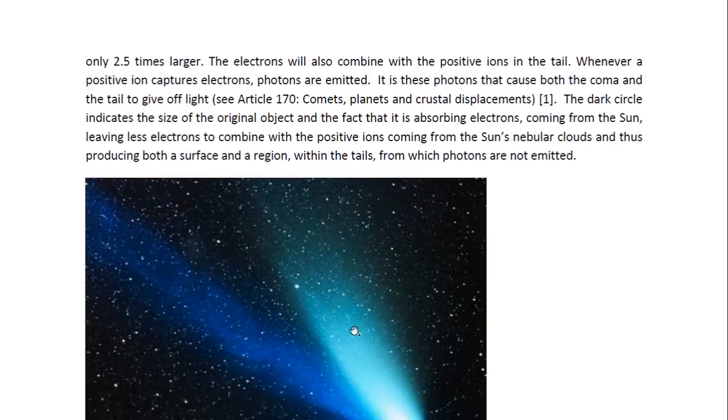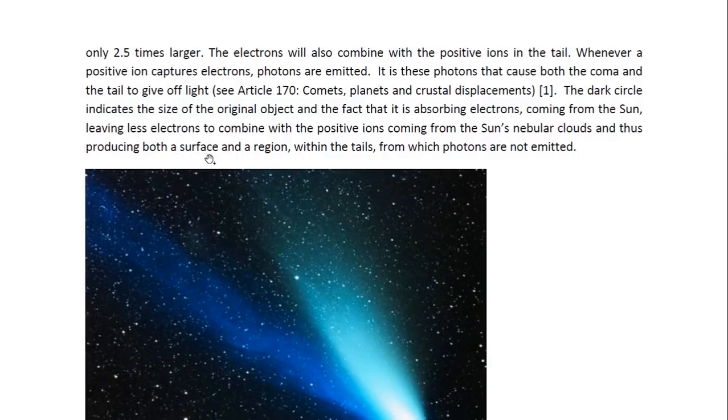The electrons will also combine with the positive ions in the tail. Whenever a positive ion captures electrons, photons are emitted. That's why it looks white. Photons are being emitted, visible light photons. It is these photons that cause both the coma and the tail to give off light. The dark circle indicates the size of the original object and the fact that it is absorbing electrons coming from the sun, leaving less electrons to combine with the positive ions, thus producing a surface and region within the tails from which less photons or no photons are emitted.